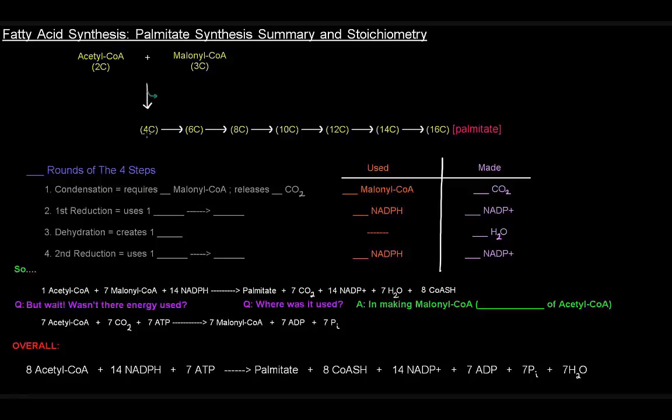Once we had that four-carbon molecule, we had to add another two-carbon unit to make the six-carbon unit, and that also had the four steps. Each one of these arrows indicates a round of fatty acid synthesis, or beta reduction.